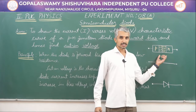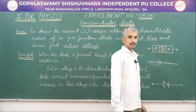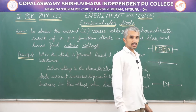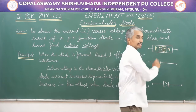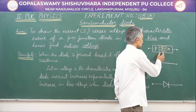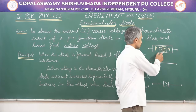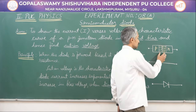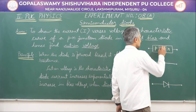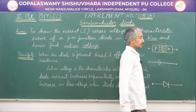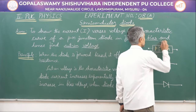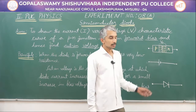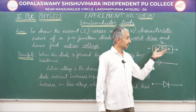Here is a representation of a PN junction diode. In a diode, we have P type on one half and N type on the other half. At the junction, we have immobile charge carriers — negative charge carriers on the P type and positive charge carriers on the N type. They are immobile and have formed a bond, which now constitutes a barrier potential of nearly V-naught. For silicon, it is nearly 0.6 volt or 0.7 volt.